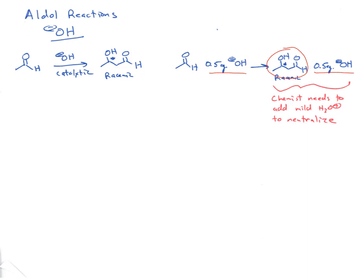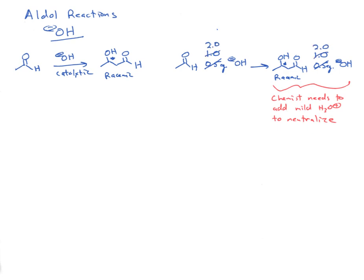The chemist would need to add mild acid to neutralize the solution. Although for simplicity I've drawn it as if the hydroxide is fully deprotonated and the beta-hydroxy aldehyde is fully protonated, those would actually be equilibrating — that's why the chemist has to add H₃O⁺ to neutralize before getting the beta-hydroxy aldehyde product. Adding a full equivalent or two equivalents of hydroxide gives the same outcome; just more acid is required to neutralize.